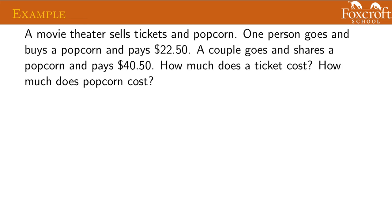A movie theater sells tickets and popcorn. One person goes and buys a popcorn and pays $22.50. A couple goes and shares a popcorn and pays $40.50. How much does the ticket cost and how much does the popcorn cost? The things we're trying to look for are variables. So ticket cost, I'm going to call T, the ticket price, and popcorn price, I'm going to call P. Now hopefully we can make two different equations with those letters. As one person goes, they're going to buy a ticket, and they're going to buy one popcorn, and it's going to cost them $22.50.